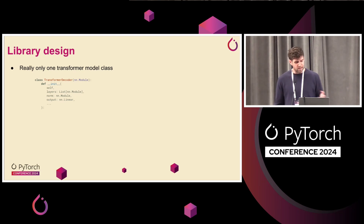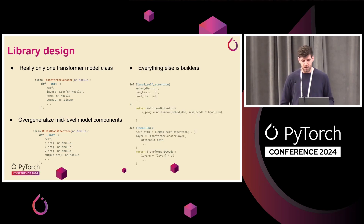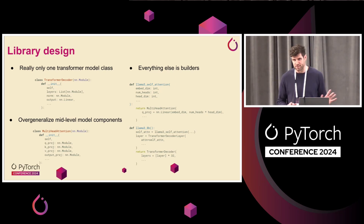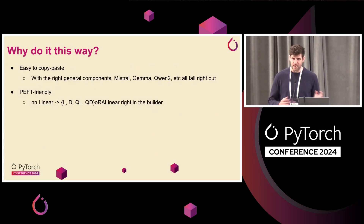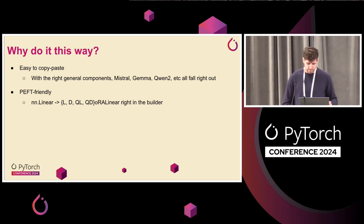Going through the design a bit, the philosophy is really that we just want to slightly overgeneralize our modeling components. We have very general modeling components — a model class and then mid-level model components, very general. The idea is that we can write builder functions that will build instantiations of different models. So we support Gemma, Llama, Mistral, different Llama models, Qwen, et cetera. These are all just a single nn.Module — it's all the same class, we just provide different builders. Copy-pasting is really easy. If you want to add a new model, you just copy-paste our builders for Llama or something similar, then change what you need to change, but you don't have to reinvent the wheel every time.